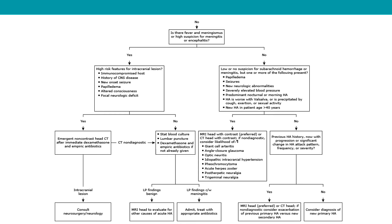If there is no fever and no suspicion for infection but one or more of these features are present, further neuroimaging is likely needed: papilledema, seizures, new neurological abnormalities, severely elevated blood pressure, predominant nocturnal or morning headache, headache worse with Valsalva or precipitated by cough, exertion or sexual activity, and age 40 and above. Perform MRI head with contrast, or CT head with contrast — MRI is preferred for its higher yield. Diagnoses to consider include giant cell arteritis, acute glaucoma, optic neuritis, idiopathic intracranial hypertension, pheochromocytoma, acute herpes simplex, post-herpetic neuralgia, and trigeminal neuralgia.